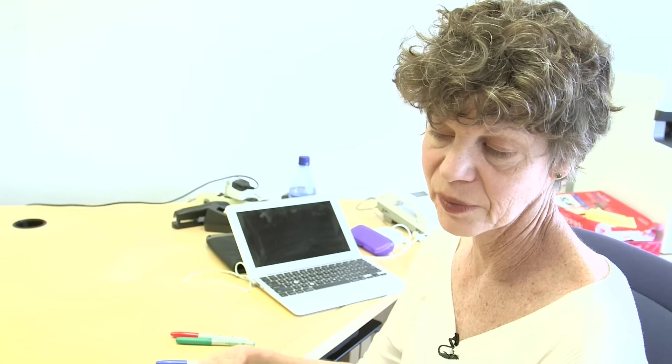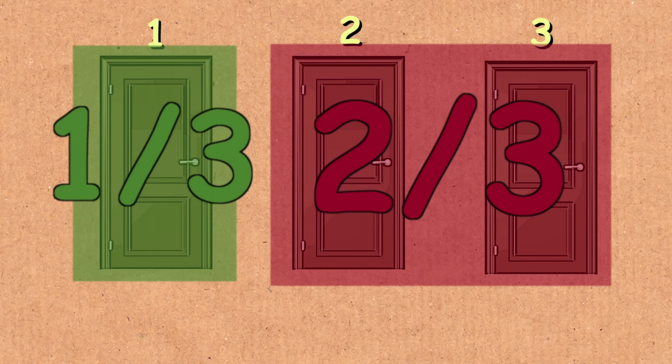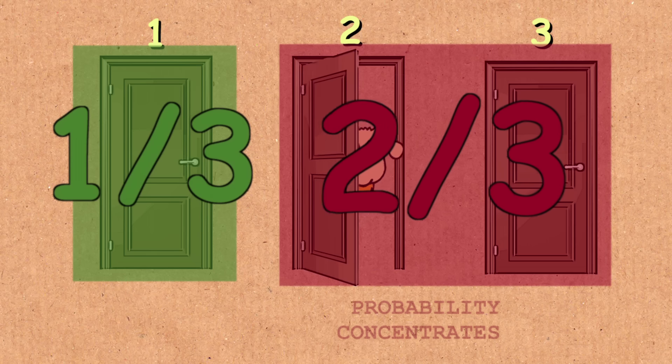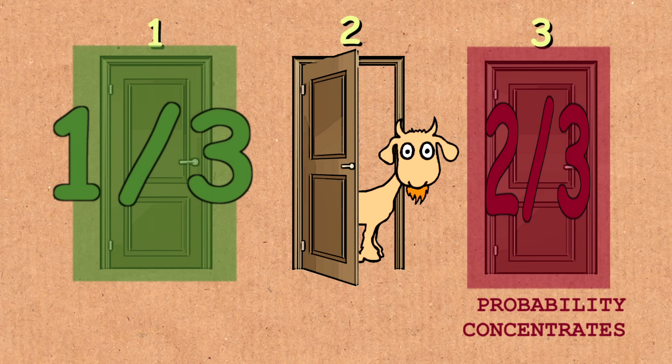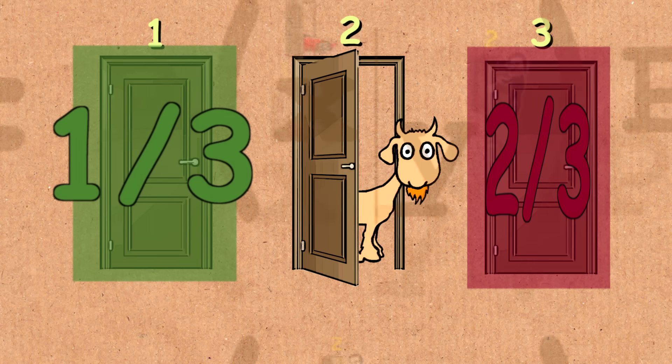One thing that you might say is that the initial two-thirds chance that the car was behind door number two and door number three got concentrated behind the door that Monty did not open. That's effectively what's happening. That's intuitively what's happening. And that, in fact, is what the mathematics shows is happening.